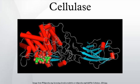Cellulases break down the cellulose molecule into monosaccharides such as beta-glucose, or shorter polysaccharides and oligosaccharides. The name is also used for any naturally occurring mixture or complex of various such enzymes that act serially or synergistically to decompose cellulosic material.